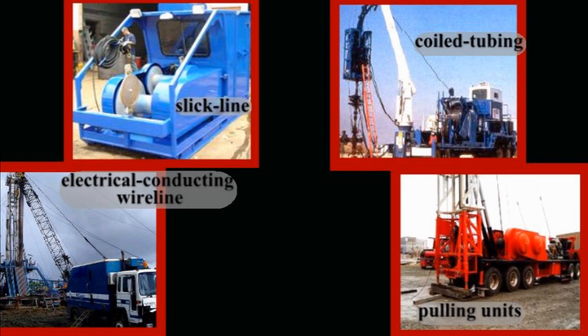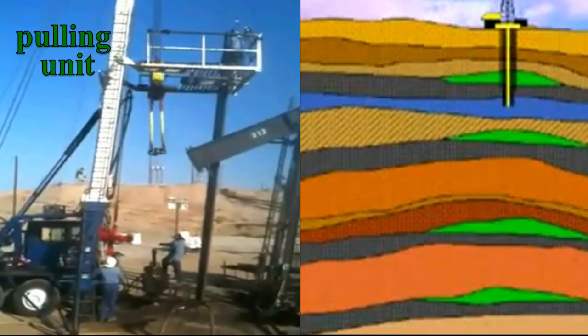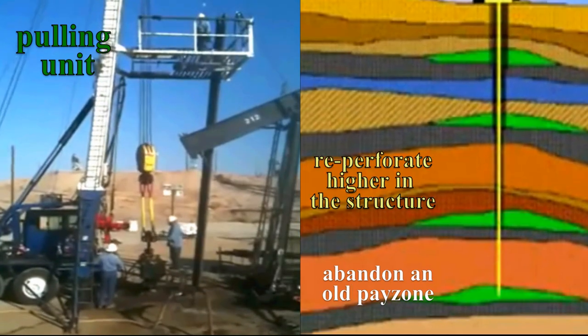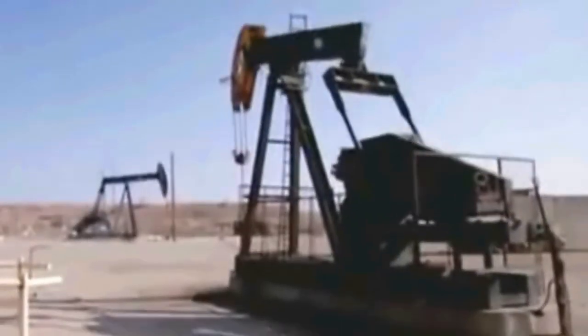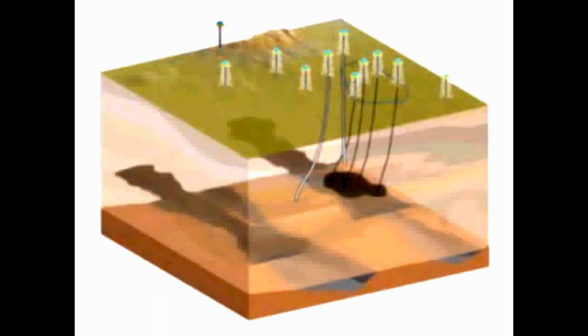Illustrating workover units, we explained a typical procedure where a pulling unit was utilized to abandon an oil pay zone and re-perforate a new pay zone higher in the structure. Overall, in this chapter, we explored the various methods used to maximize field development. Good engineering in field appraisal and development ensures that our field will produce for a reasonable amount of time. It may be necessary to use more interventions. In Chapter 10, we will discuss artificial lift and its role in optimally depleting the hydrocarbons from a field.